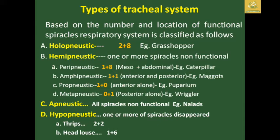Based on the number and location of functional spiracles, the tracheal system is classified into several types. The holopneustic type has two plus eight spiracles — example: cockroach. The hemipneustic type has one or more non-functional spiracles. The peripneustic type has one plus eight mesothoracic plus abdominal spiracles — example: caterpillar. The amphipneustic type has one anterior and one posterior spiracle — example: maggots. The propneustic type has one anterior spiracle — example: puparium.